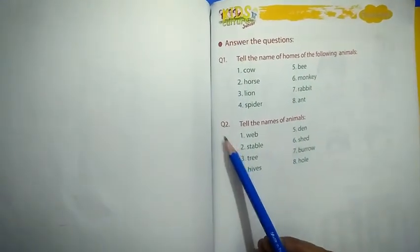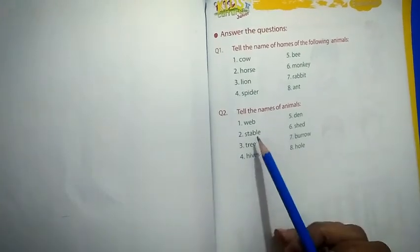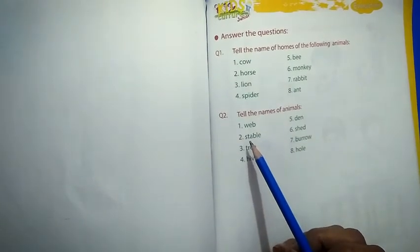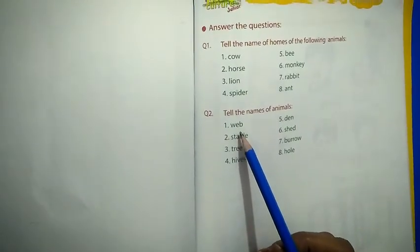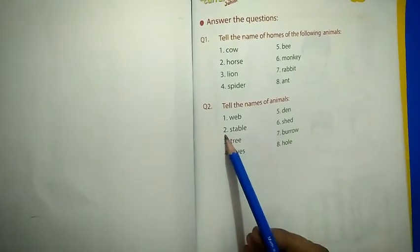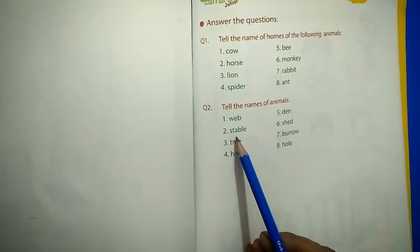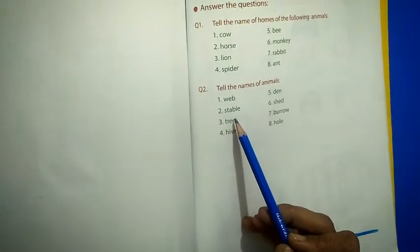Question number 2: Tell the names of animals. These are the homes of the animals. Now tell me the names of their animals. Number 1: Web. Who lives in a web? Which animal? Spider. Good. Spider lives in a web. Number 2: Stable. A horse. A horse lives in a stable. Number 3: Tree. Who lives on a tree? Monkey. Monkey lives on a tree. Number 4: Hive. Who lives in a hive? Bee.